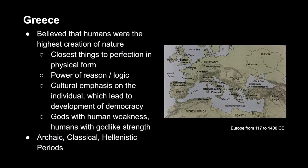Starting in Greece, the Greeks believed that humans were the highest creation of nature — the closest things to perfection in physical form. Humans also had the power of reason and logic, so there was a major cultural emphasis on the individual, which led to the development of democracy. These thoughts also affected their religion, because they had gods with human-like weaknesses and humans with god-like strengths.